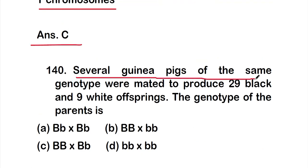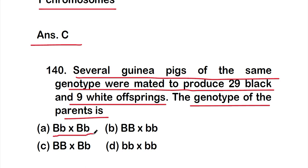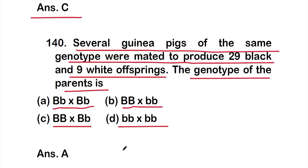Question 140 (final question): Several guinea pigs of the same genotype were mated to produce 29 black and 9 white offspring. The genotype of the parent is option A - Bb × Bb, option B - BB × bb, option C - BB × Bb, or option D - bb × bb. The right answer is option A, Bb × Bb. These are all 20 questions of Part 7 on Mendelian genetics. Thank you for watching.